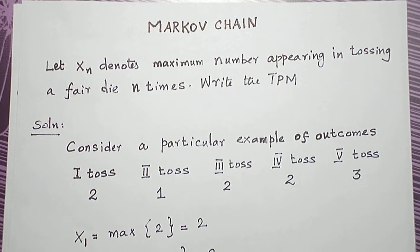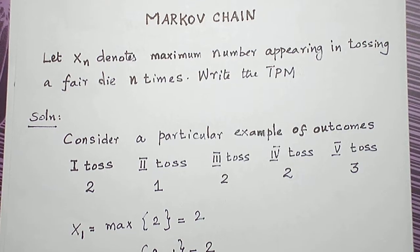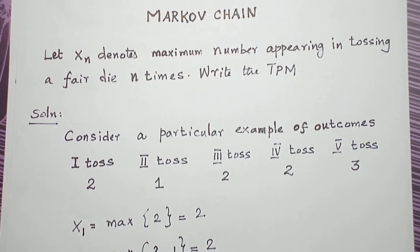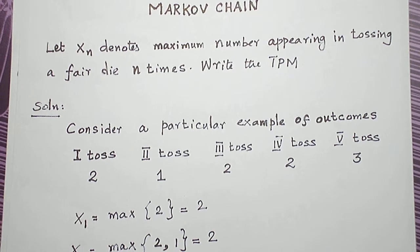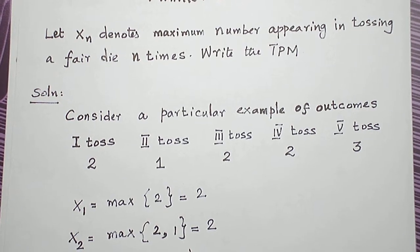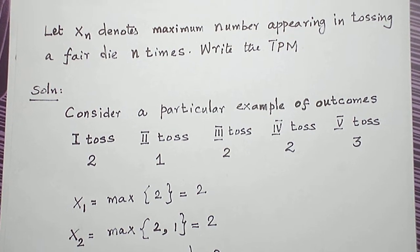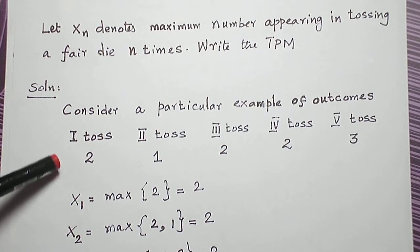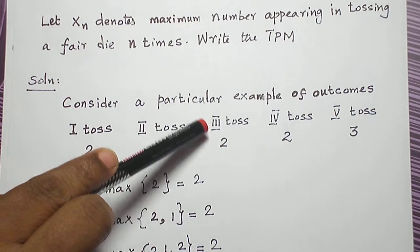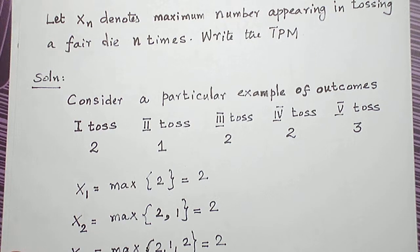Let me explain it with one example. Since we are tossing a fair die, any number from 1 to 6 may be maximum. So there are 6 possible states and the transition probability matrix is going to be a 6 by 6 matrix. Let me explain it with one particular example. Consider this: first toss I got a number 2, second toss number 1, third toss number 2, fourth toss number 2, fifth toss I got a number 3.